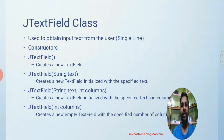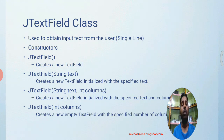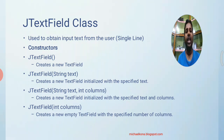The next component is JTextField, which is similar to a text box in HTML. You can get input from the user as a single line of editable text. There are several constructors: the first accepts nothing and creates an empty text field; the second accepts an initial text string; the third accepts both the initial text and the number of columns to display; and the fourth accepts only the number of columns, leaving the field empty.